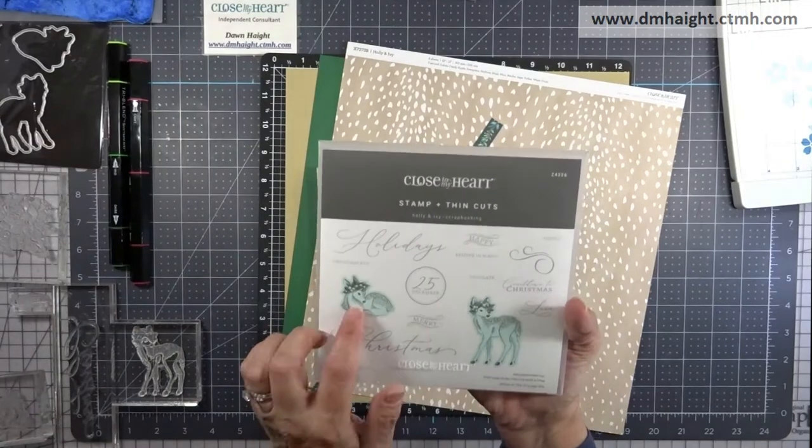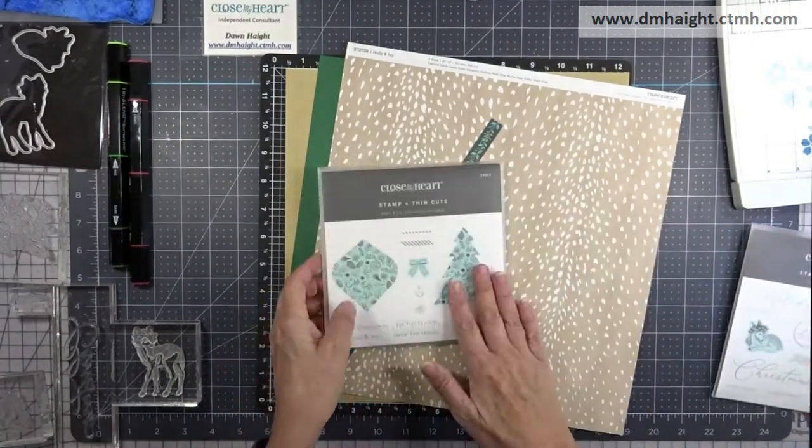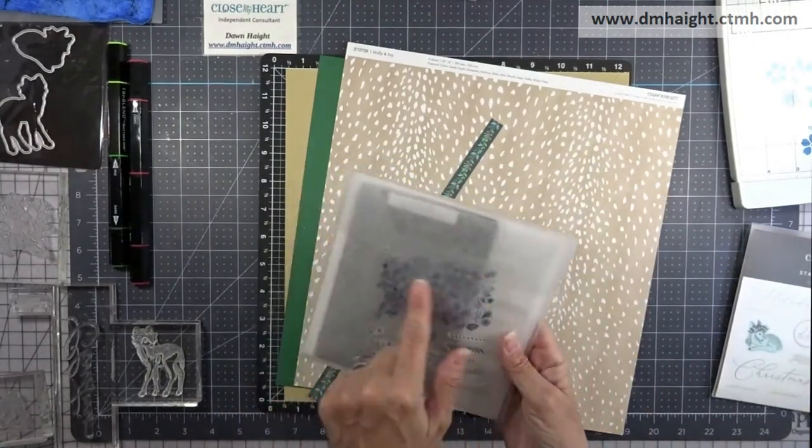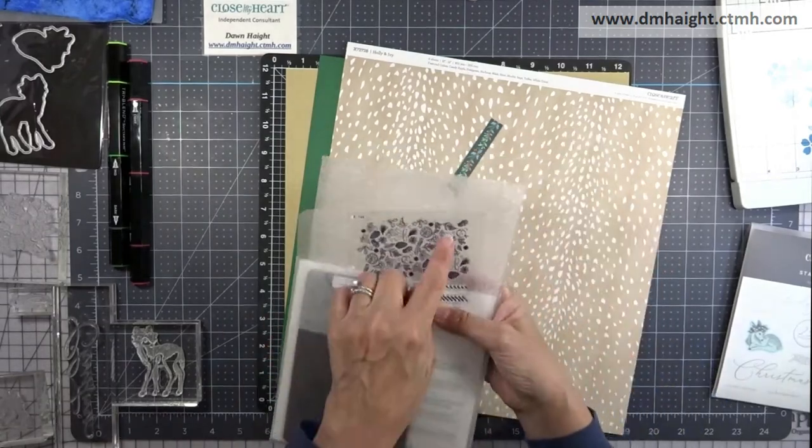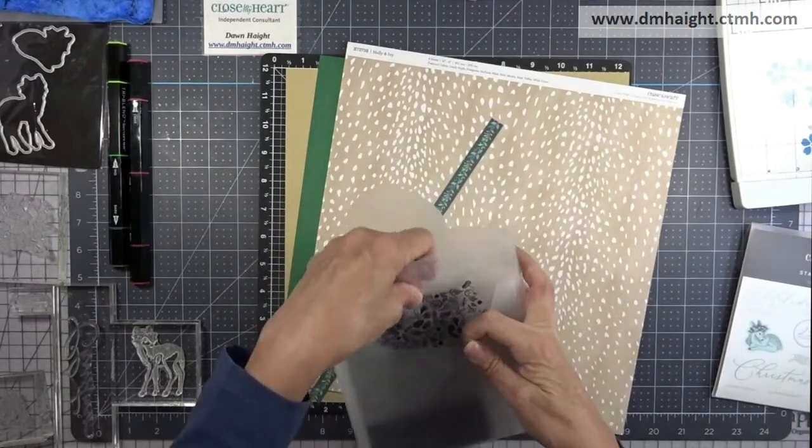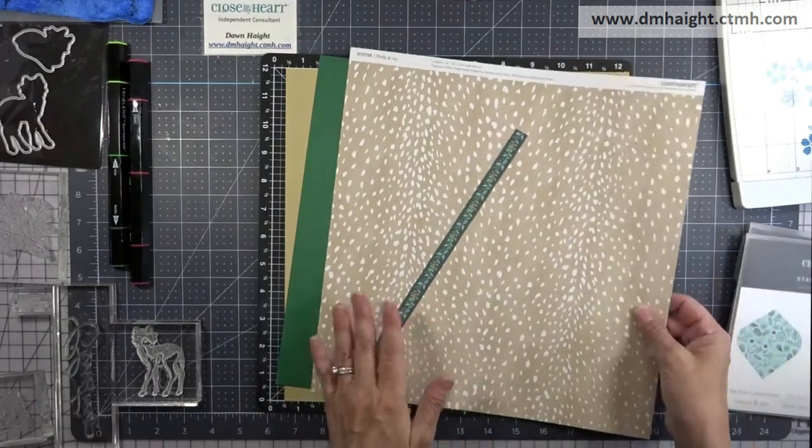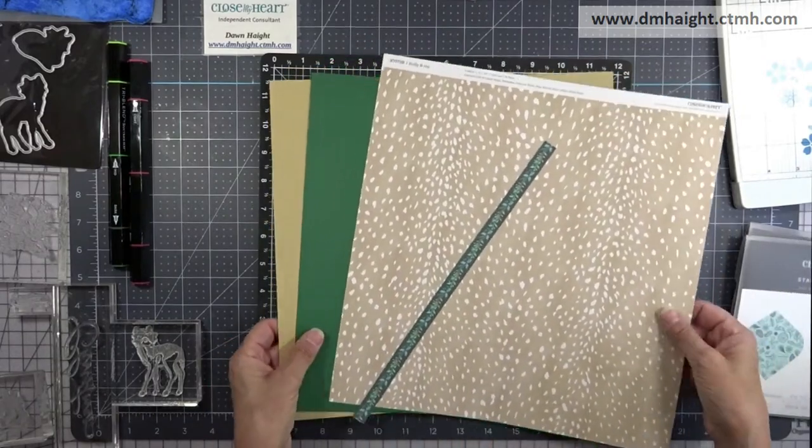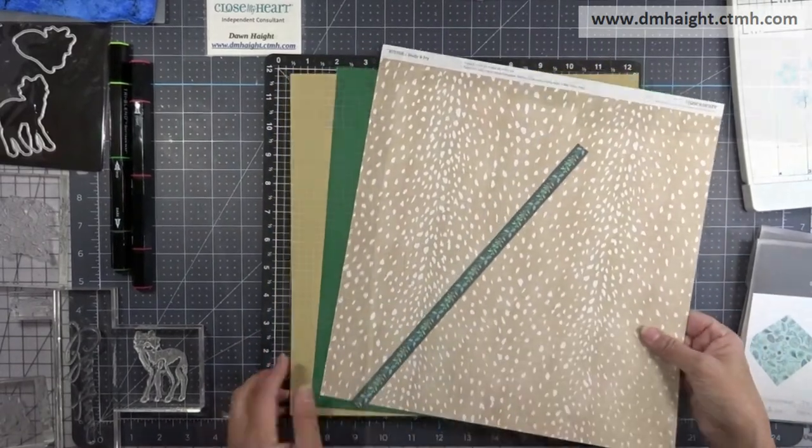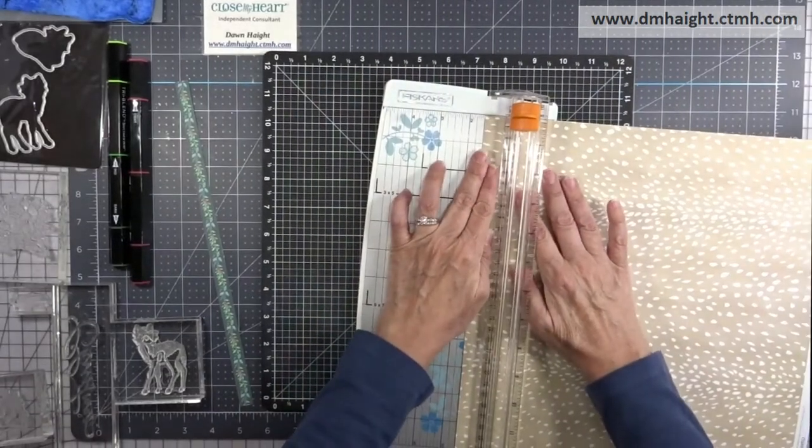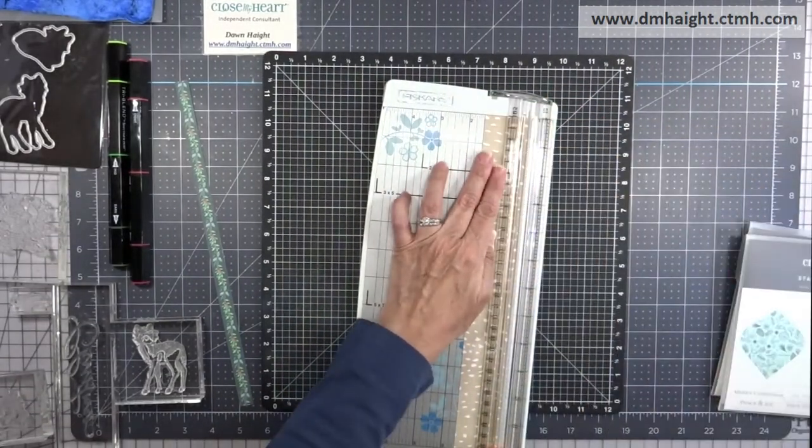This is the stamp set, and the supplies I'm using are the deer and the sentiments on this stamp set. Then I'm using the background stamp from Holly and Ivy card making workshop, just using that big background stamp, and then I'm using papers from the Holly and Ivy collection. Okay, so let's get started.